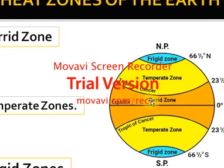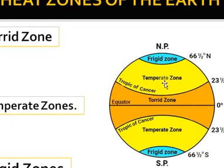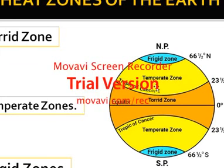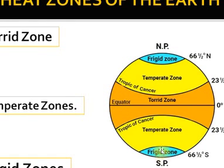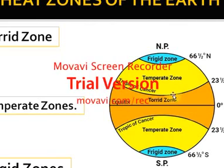The Torrid Zone is between the Tropic of Cancer and the Tropic of Capricorn. This is also called the Heat Zone. The Temperate Zone lies between the Tropic of Cancer and the Arctic Circle in the north, and between the Tropic of Capricorn and the Antarctic Circle in the south. The Frigid Zone is near the poles, within the Arctic and Antarctic Circles.